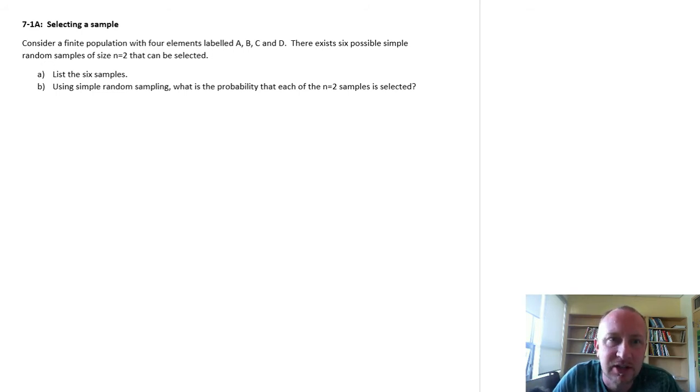So here we've got a finite population, four elements in this population, six possible simple random samples. You might recognize this, this is a combination problem, right?